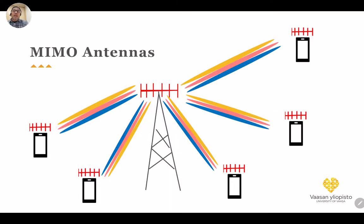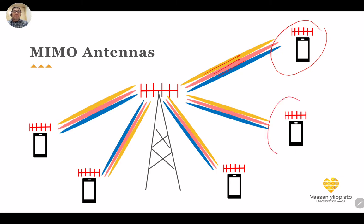Now, what about MIMO? MIMO means we use multiple antennas not only at one terminal but at both the transmitter and the receiver. In that case we can get different benefits, one of which is spatial multiplexing — increasing capacity by getting parallel channels with each terminal — not one parallel channel total, but parallel channels per terminal. This greatly enhances performance, capacity, and spectrum efficiency.